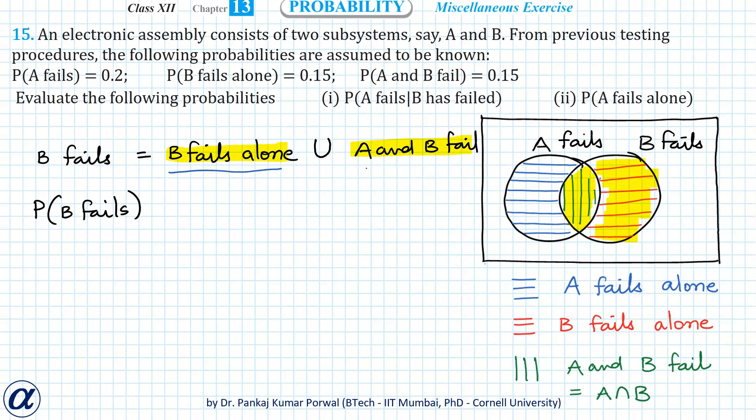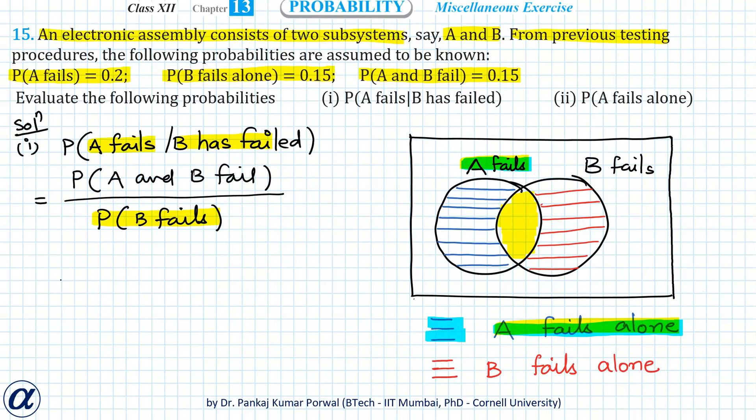that event B fails alone and event A and B fail are mutually exclusive. So probability of union I can write as probability of B fails alone plus probability of A and B fail. So probability B fails alone is 0.15 plus probability A and B fail is 0.15, so that gives me 0.3. So probability that B fails is 0.3.